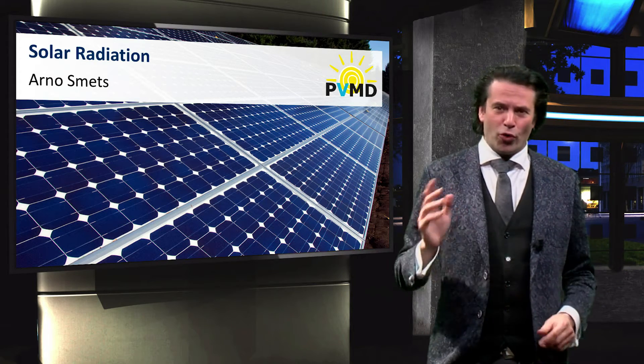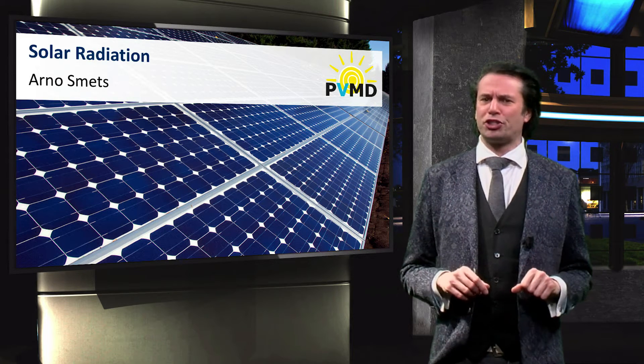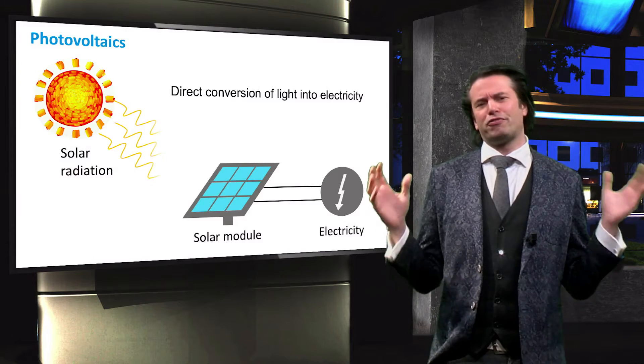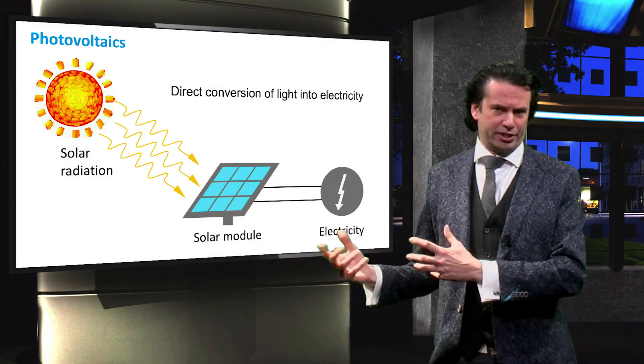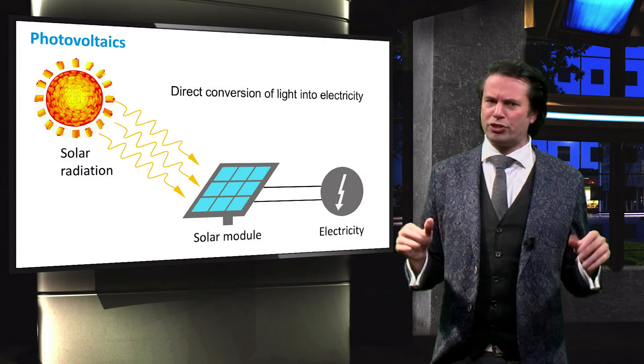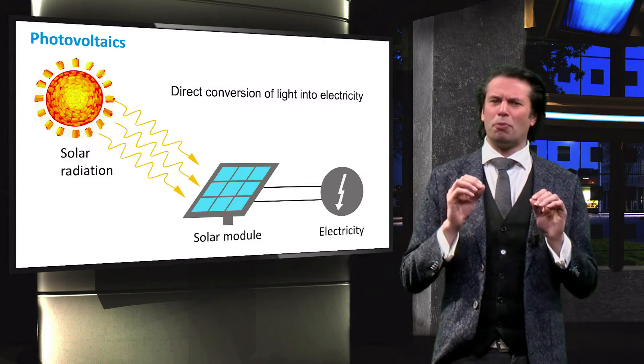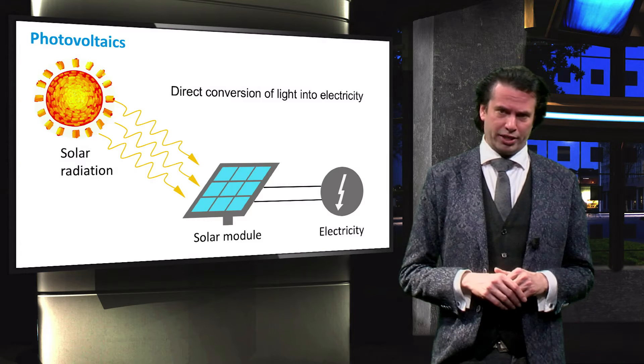After discussing the concepts of force, energy and power, we will now consider the energy conversion that takes place in solar cells. Photovoltaics involves the direct conversion of light into electricity. In the next video we will learn how this conversion takes place. In this video we will focus on some important properties of light and on solar radiation.